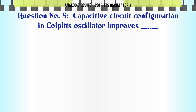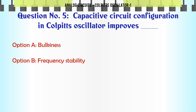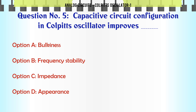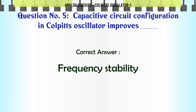Capacitive circuit configuration in Colpitt's oscillator improves: A) Bulkiness, B) Frequency stability, C) Impedance, D) Appearance. The correct answer is: Frequency stability.